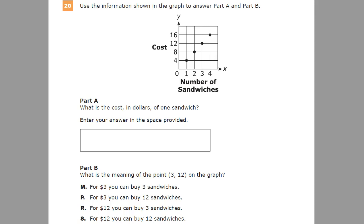This is really a question about whether you understand how the coordinate axis works and how to read it. The key thing here is just to read your axis labels. They tell you exactly what you need to know. On the bottom you can see it's the number of sandwiches, and then the cost.